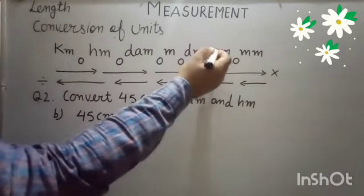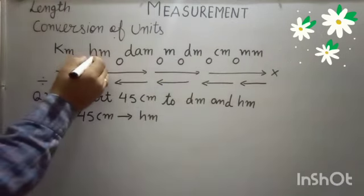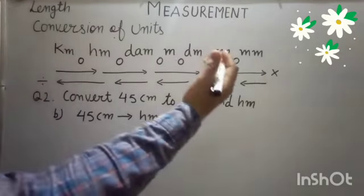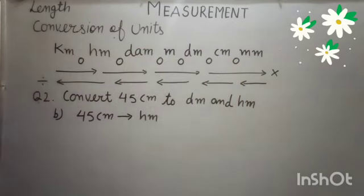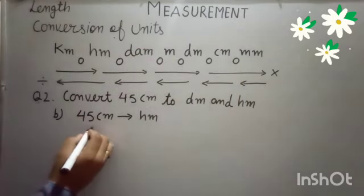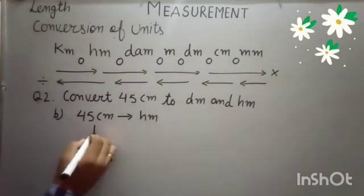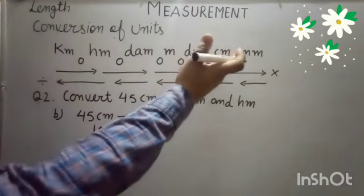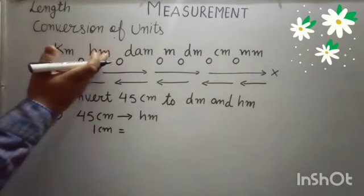We have to move from right to left, from smaller to higher. Start with 1 cm is equal to Hectometer.